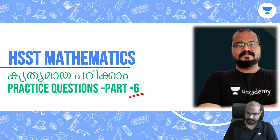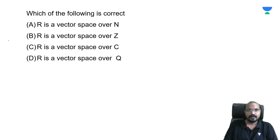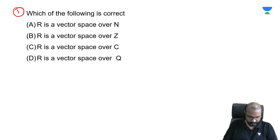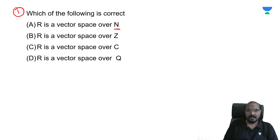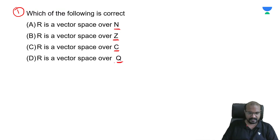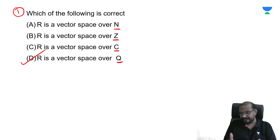Question number 1. Which of the following is correct? Option A: R is a vector space over N, the set of all natural numbers. Option B: R is a vector space over Z, the set of all integers. Option C: R is a vector space over C, the set of all complex numbers. Option D: R is a vector space over Q, the set of all rational numbers. Simple — option D is the answer: R is a vector space over the field Q.